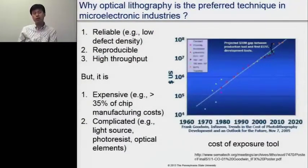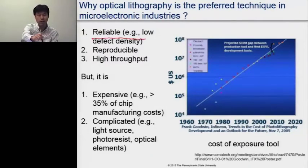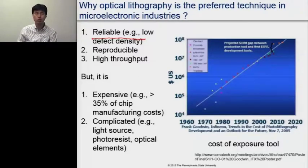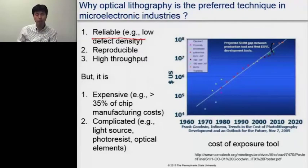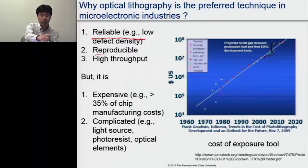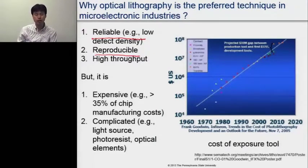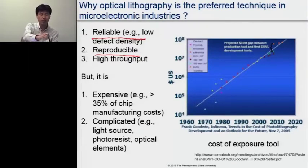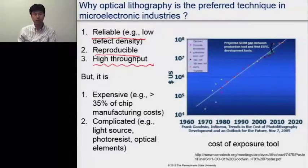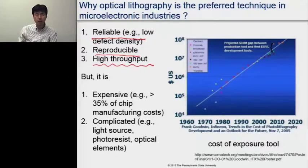So why is optical lithography the preferred technology in the microelectronics industry? There are three major reasons. First, this technology is very reliable — in other words, it generates very few defects and is very reproducible, so it doesn't have many errors from wafer to wafer. Second, it provides high throughput — it keeps producing wafers and can handle more than one wafer per hour without any problem.